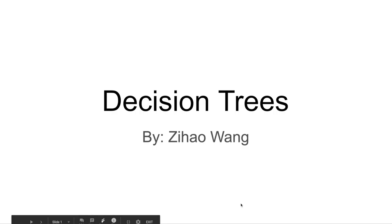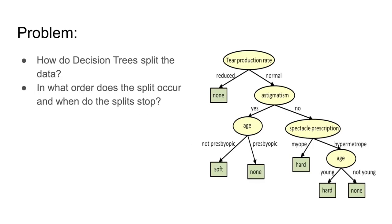For the past few weeks, I've been doing my continued research on decision trees. This is going to be part two of the decision tree video, paired with part one. Specifically in this video, we'll be taking a look at how decision trees split their data. On the right-hand side, you see just a normal decision tree, but the problem is how do we know when to split and how to split? For example, how do we know that we should split on age, tier production rate, or spectacle prescription?